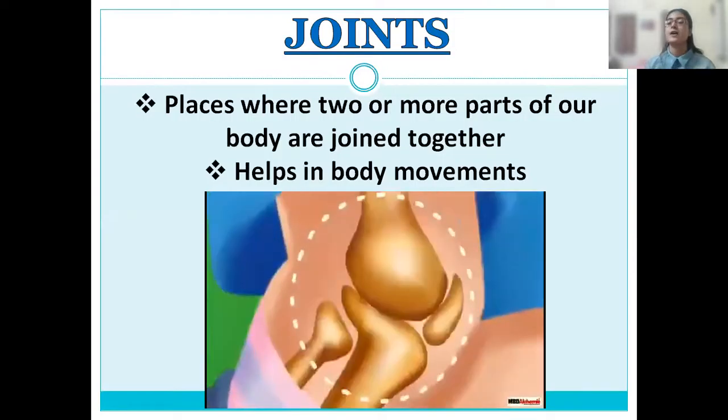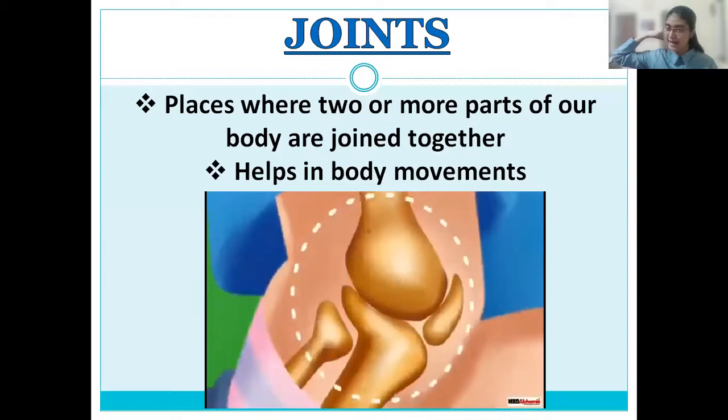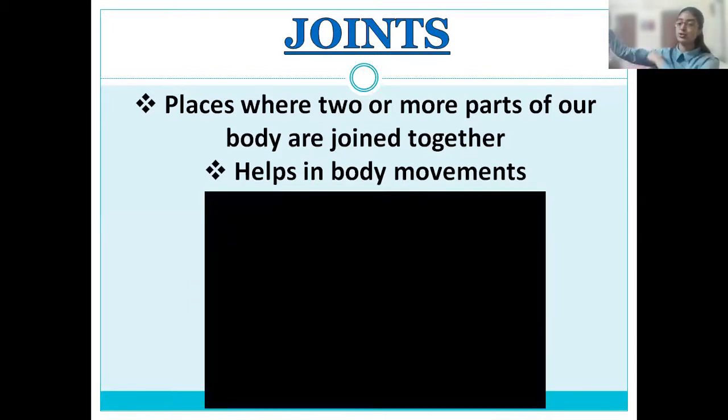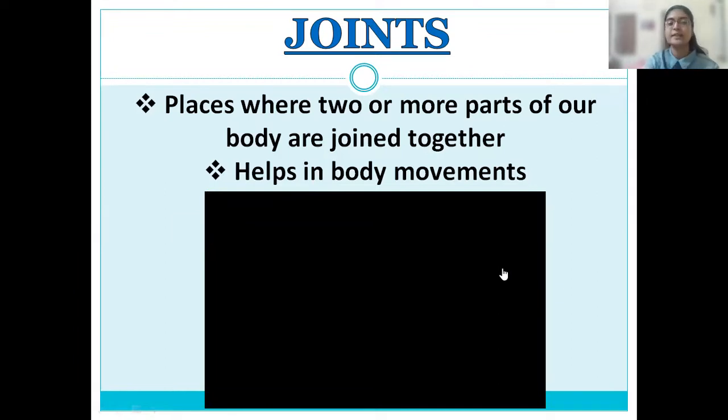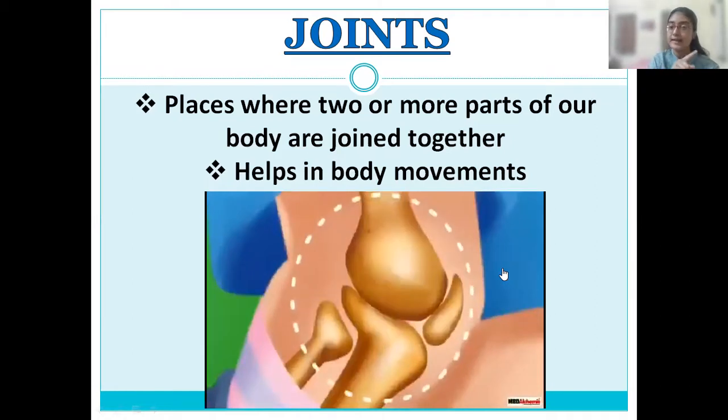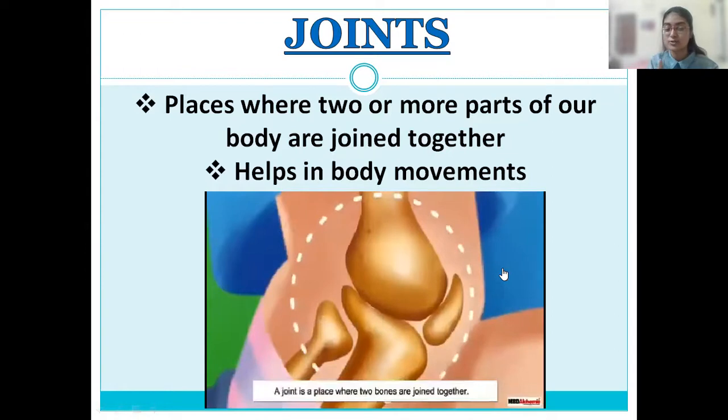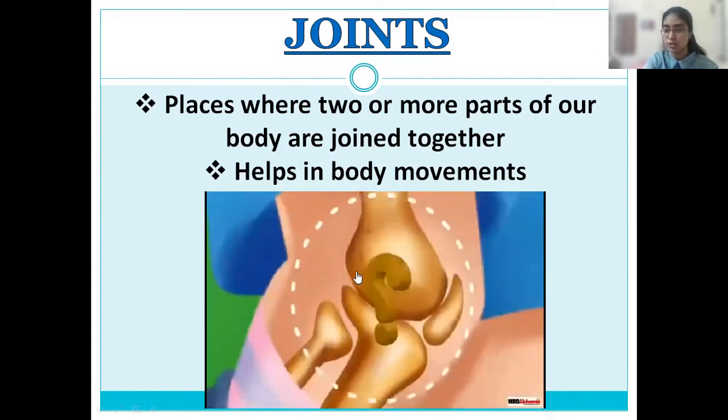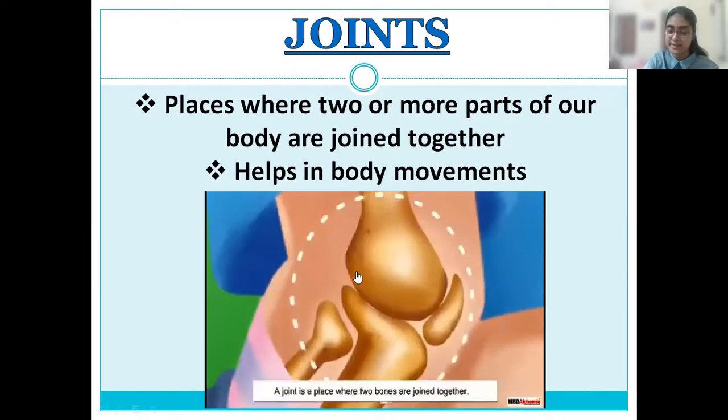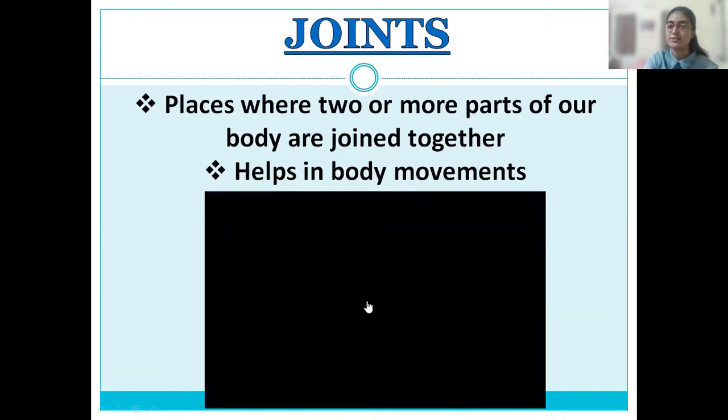Whenever you are trying to move something like your hand, you see that two parts are joined together at this place. What is this place called? A joint. When two parts are joined together, it forms a joint. And what is the function of that joint? It helps in body movements. Similarly, when that lady was moving the leg and you also tried it, those two pieces that were moving form a joint. The place where two bones are joined is known as a joint.